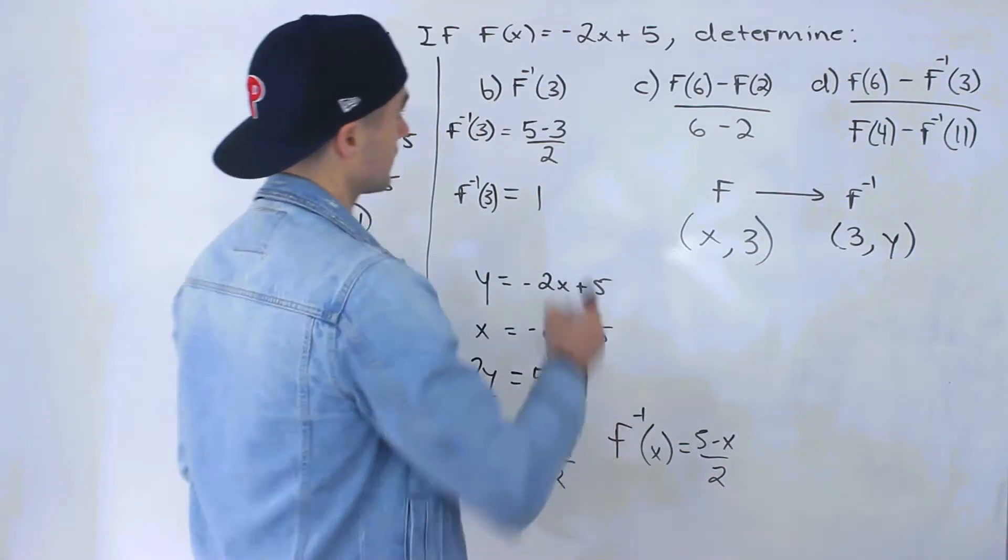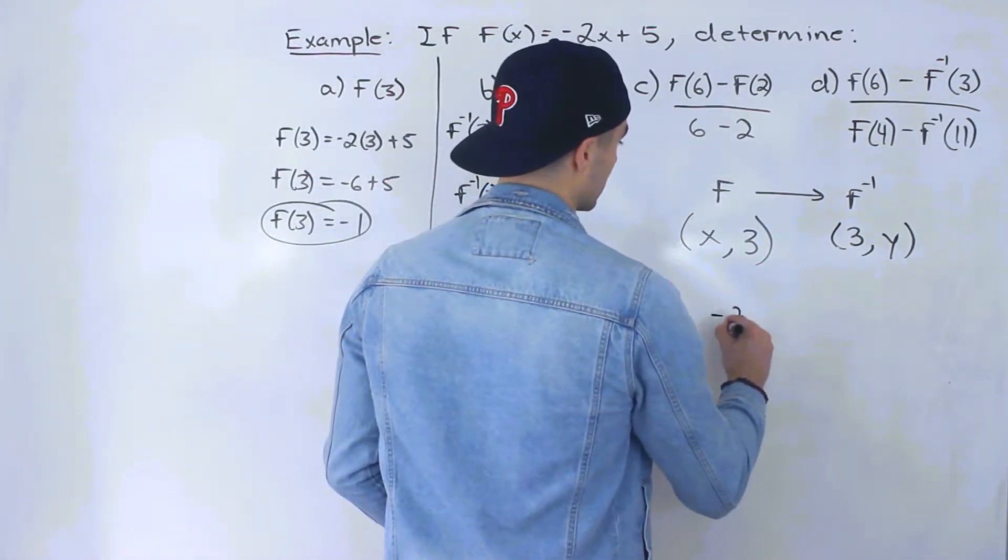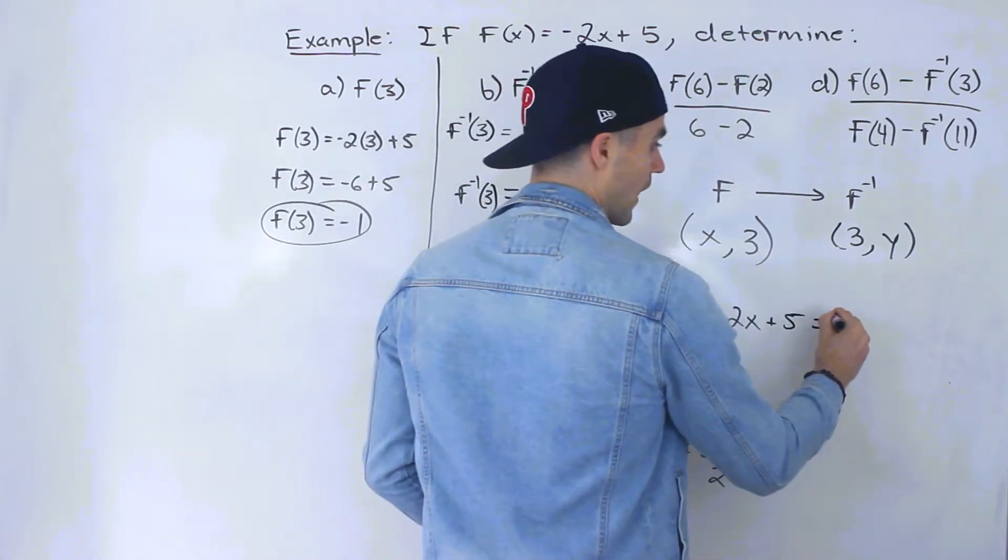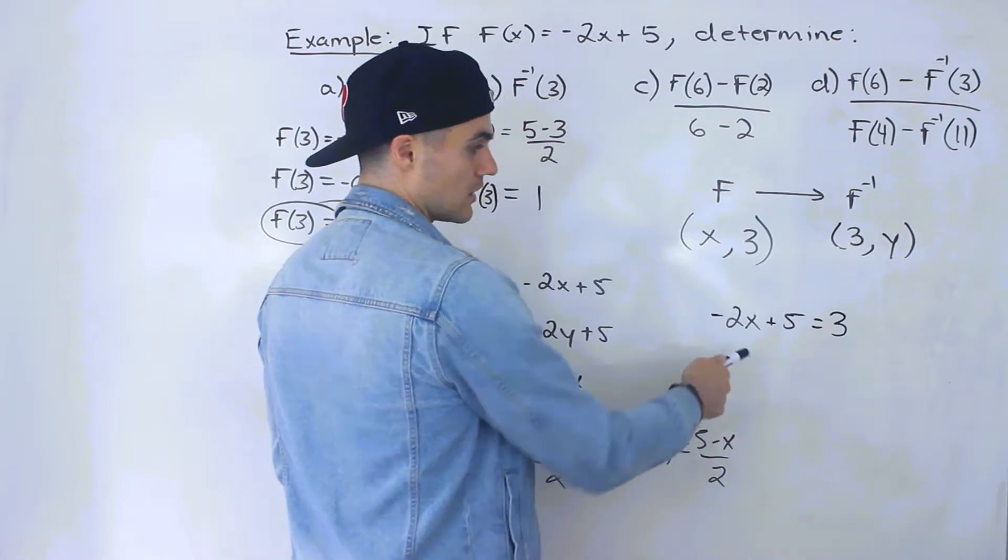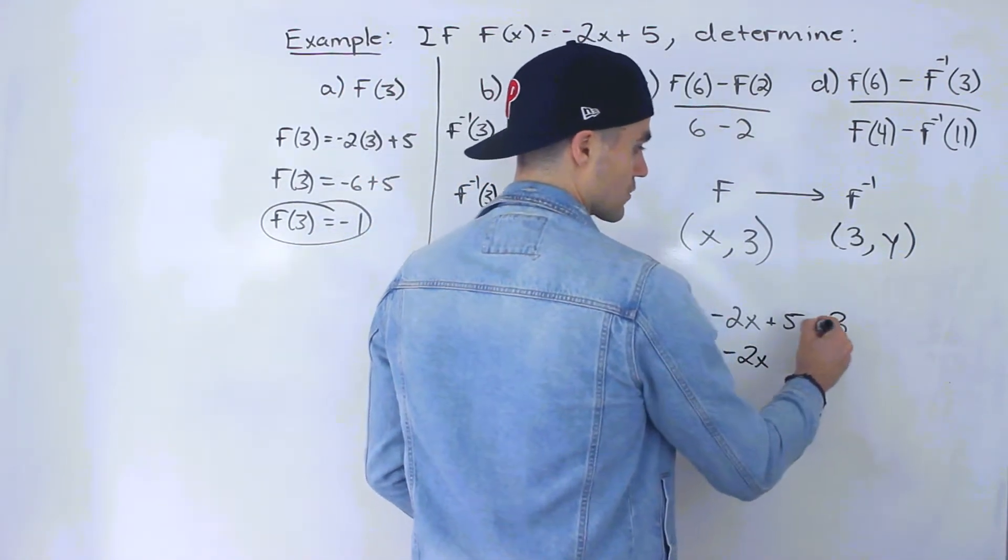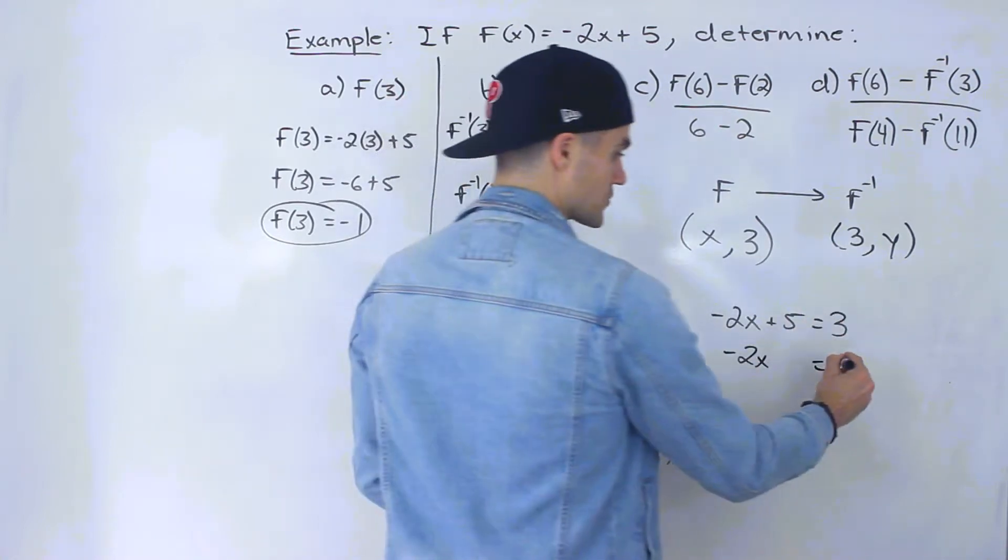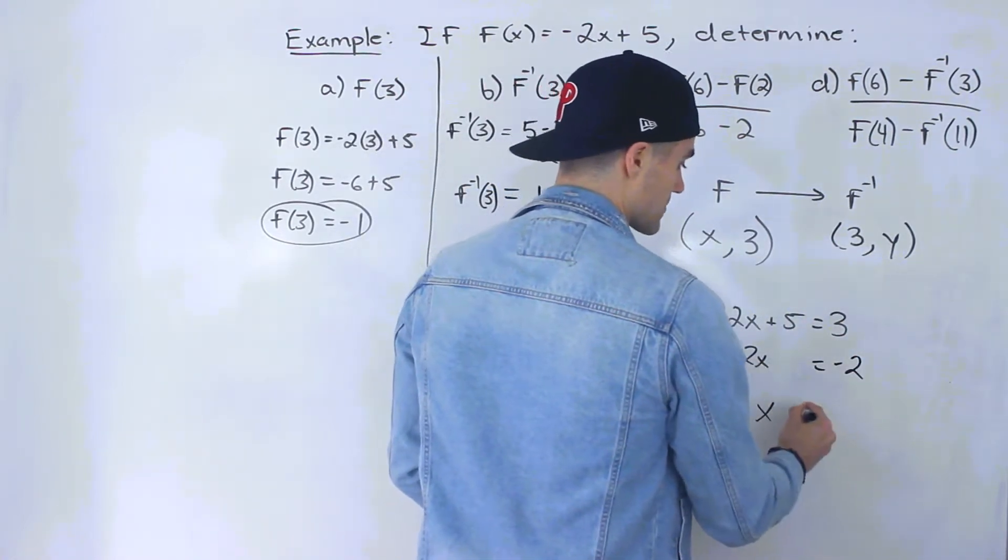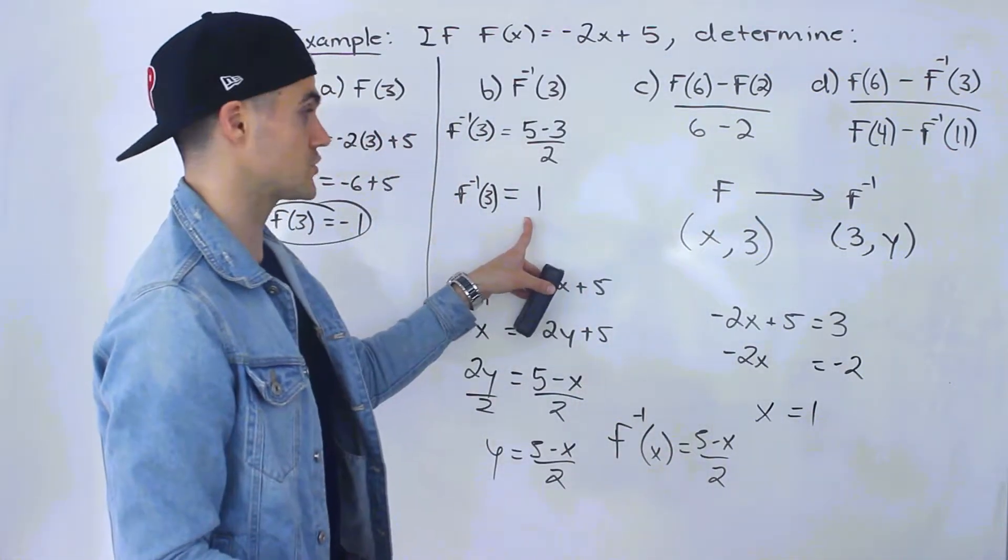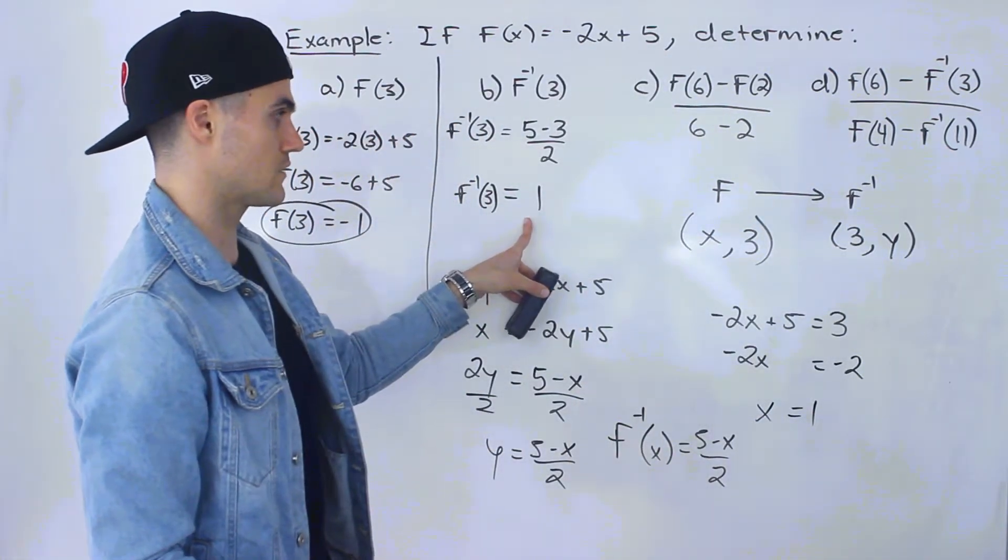And we could just solve for the x value. So if we brought the function back, -2x plus 5, and we let the y value equal 3, we could solve for this x value. We'd have -2x equals 3 minus 5. Bring the 5 over, so we'd have -2. Divide both sides by -2 to get the x by itself. We'd end up with positive 1, which is the y value of the inverse.